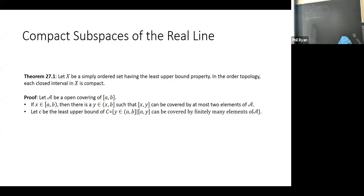Now consider the set C of points y for which the closed interval [a,y] can be covered by finitely many elements of the covering. This set is not empty — we just proved there is at least one such element. It is a subset of our simply ordered set, which has the least upper bound property. Therefore, this set has a least upper bound; call it c.